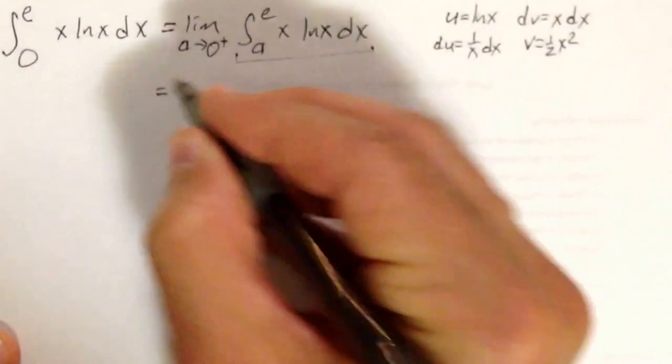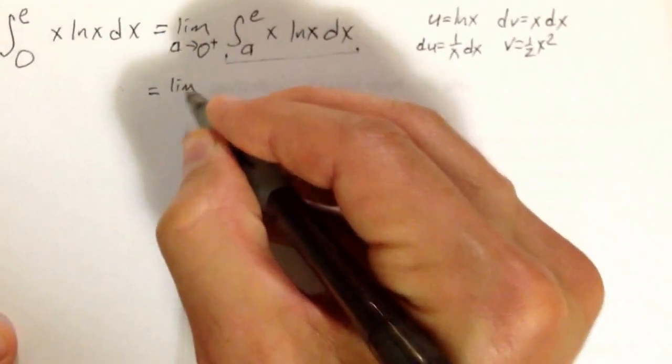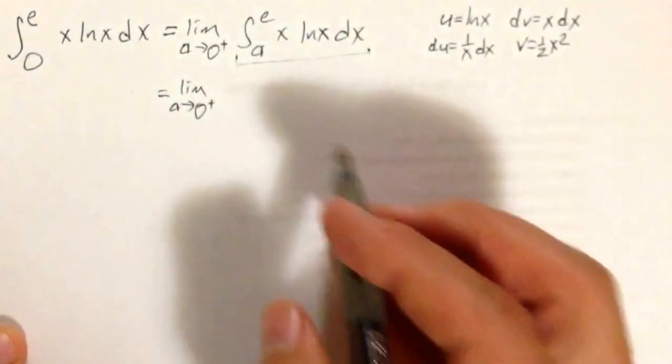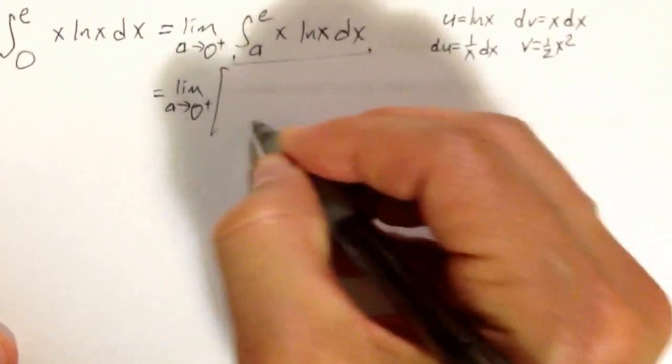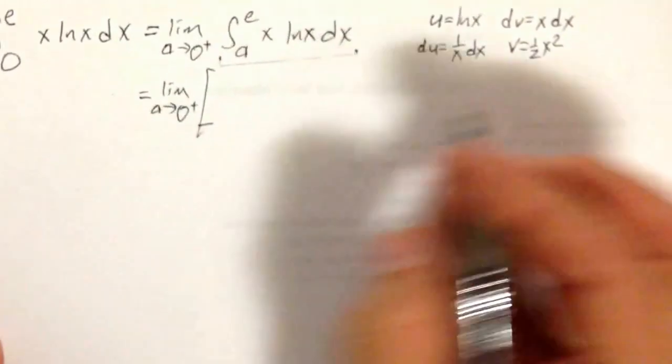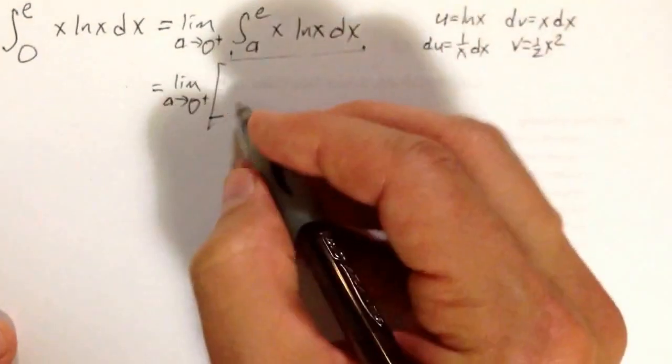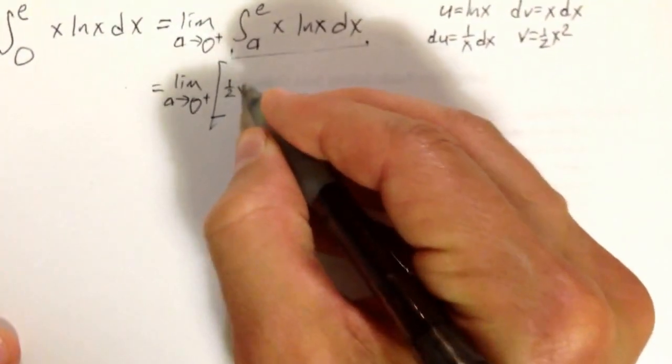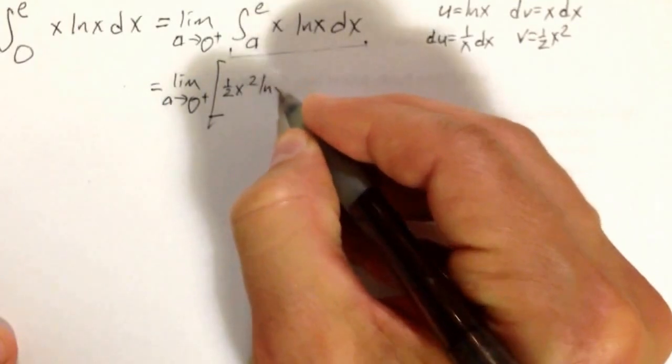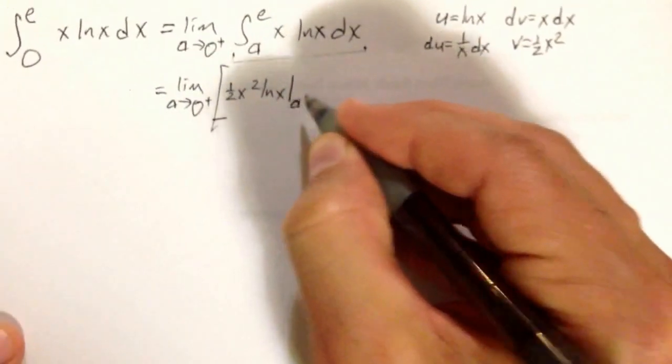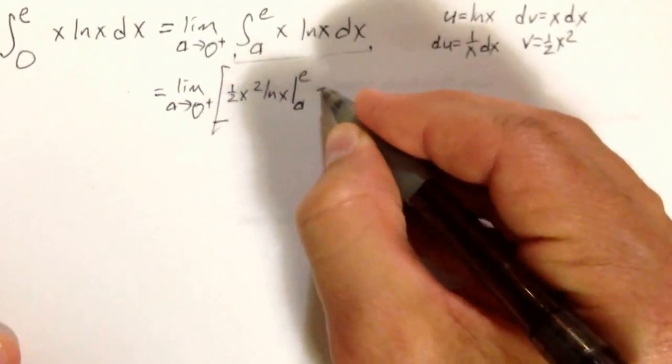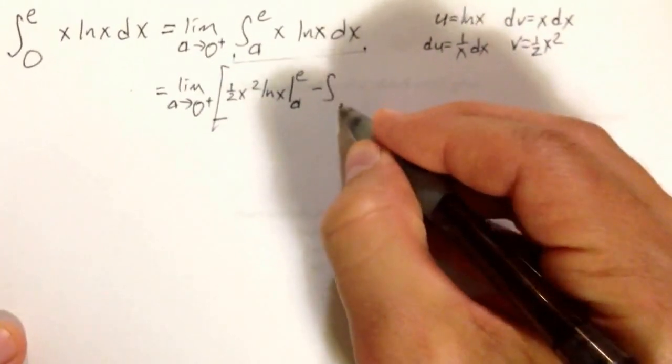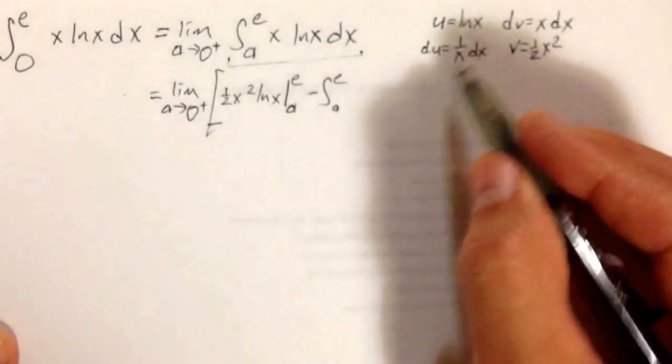And what I get here is I get the limit as a goes to 0 from the positive side of the whole quantity. Let's see, uv, so that's one-half x squared natural log of x evaluated from a to e, minus the integral from a to e of v du.